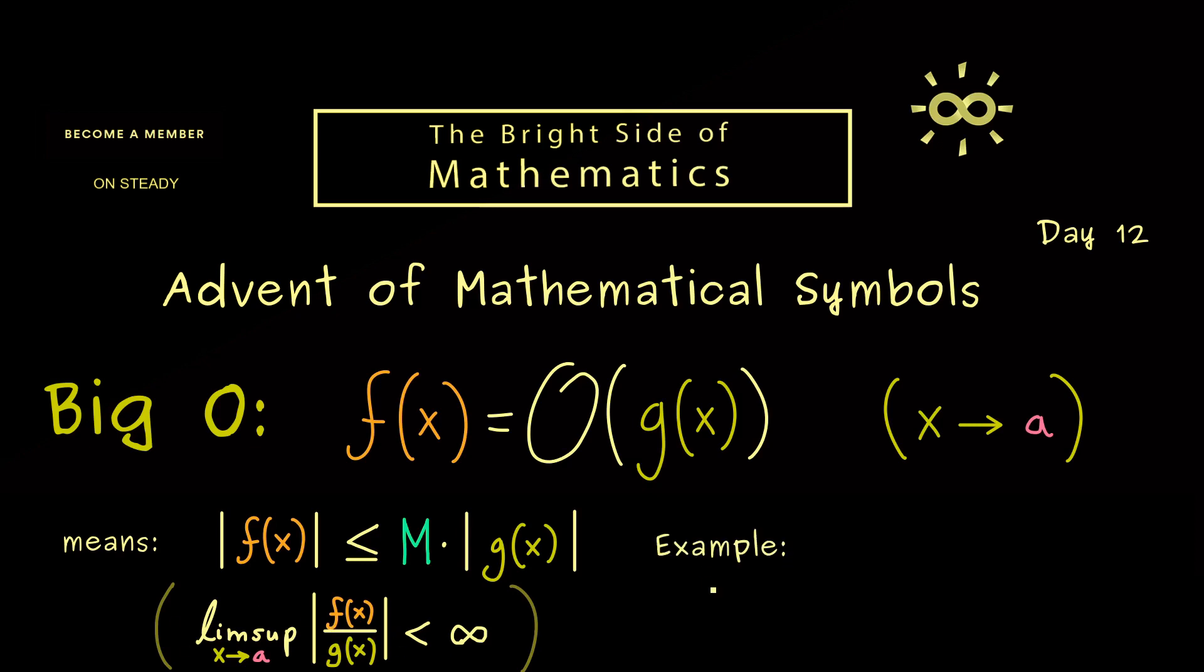So maybe it's even better for the explanation when we look at an example. So let's say we have the polynomial x squared plus x plus 2. Then we can say this is in O of x squared if x goes to infinity.